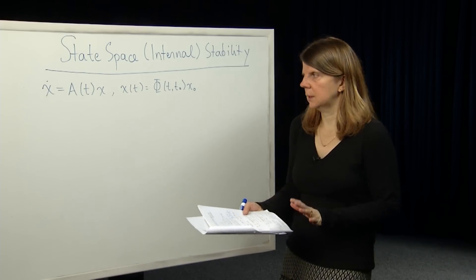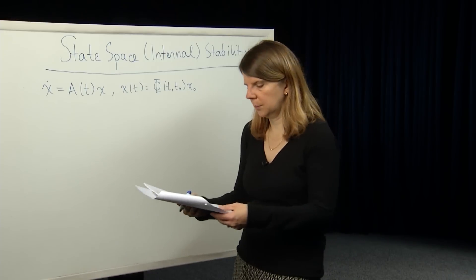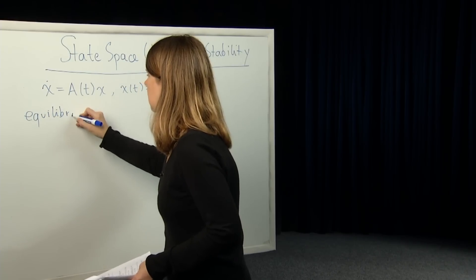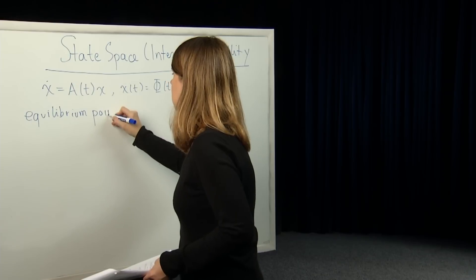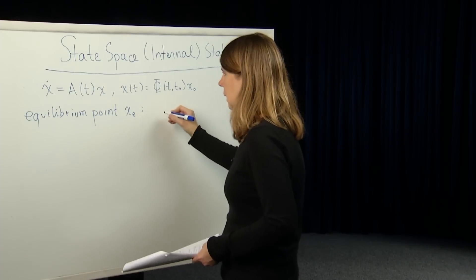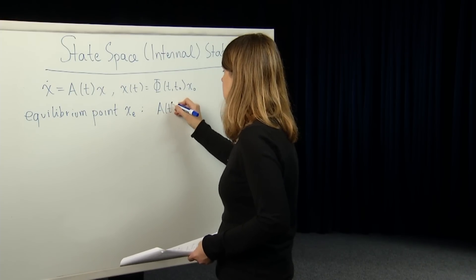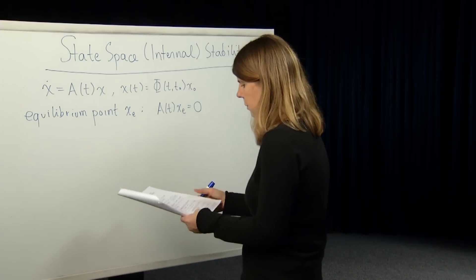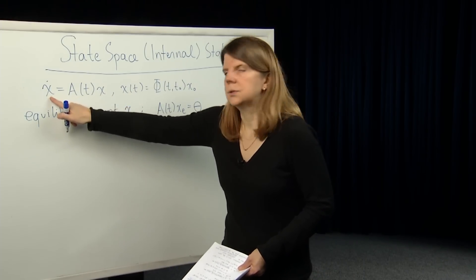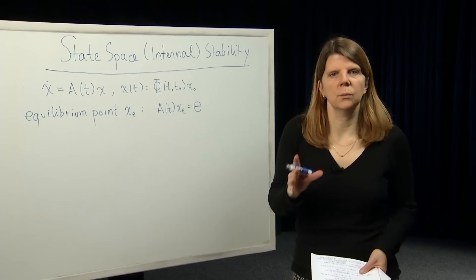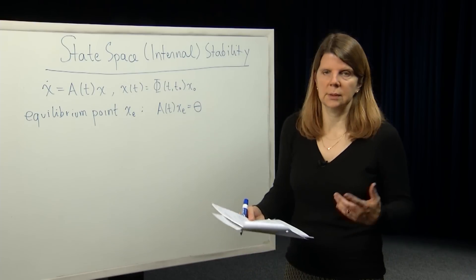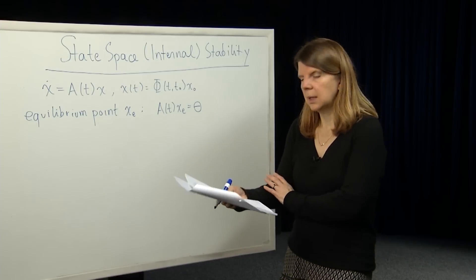Before we start with the definitions of stability, we're going to define the concept of an equilibrium point. An equilibrium point xe is a state value at which A of t times xe is equal to zero, the zero vector. So that means that if you're at a value xe, then x-dot is equal to zero, meaning that the system state won't change. If you're at an equilibrium point, the system will stay at that equilibrium point — it's a point of rest or a steady state value of the system.